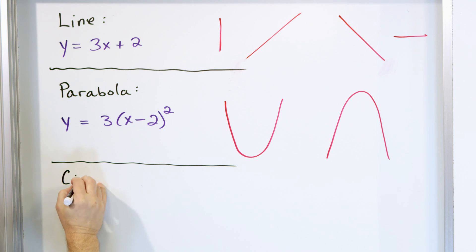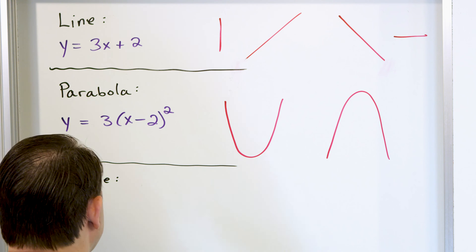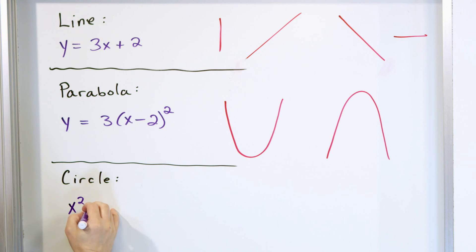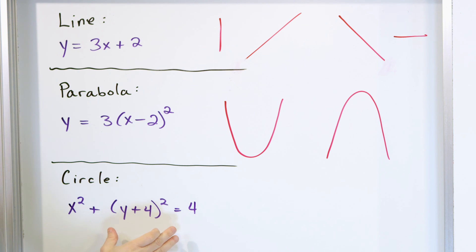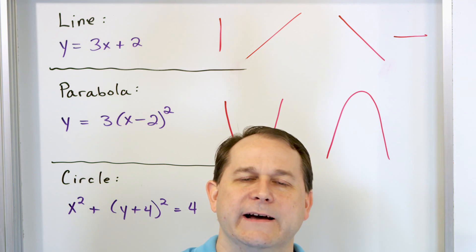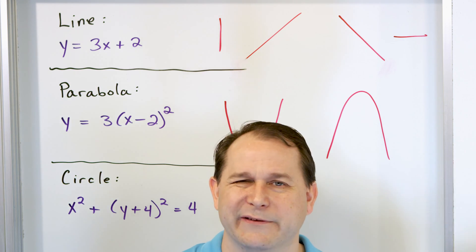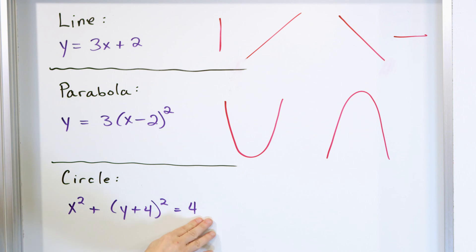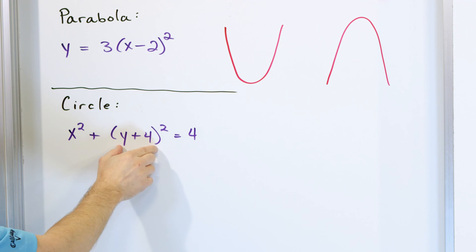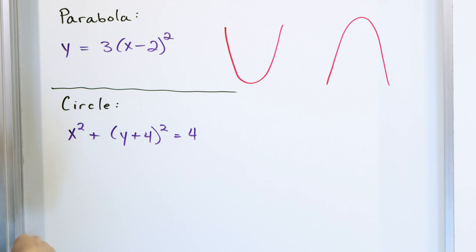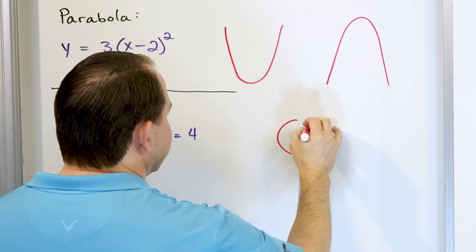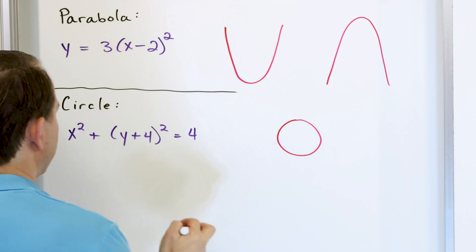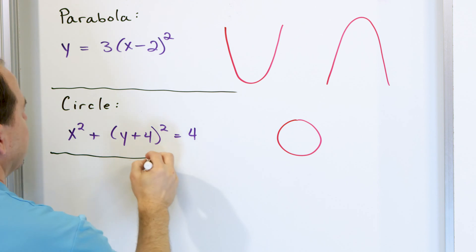For a circle, an example equation might be x² + (y + 4)² = 4. Both the x and y terms are squared. The radius equals two — the square root of the right-hand side. The shift values tell you the center's location; here there's no shift in the x direction. A circle looks like a circle, and we can move them all over the xy plane depending on the shifting values.